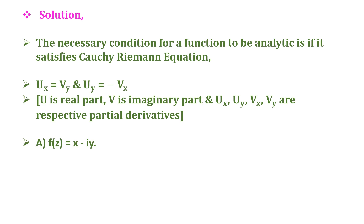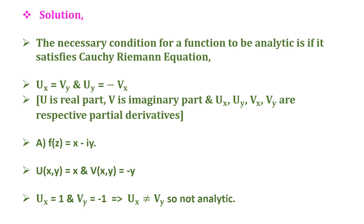For option a, f(z) = x minus iy: the real part u(x,y) = x and the imaginary part v(x,y) = minus y, which gives ux = 1 and vy = minus 1. This implies ux is not equal to vy, so the function is not analytic.